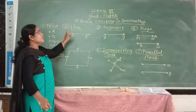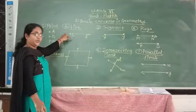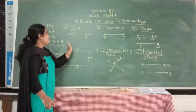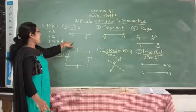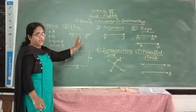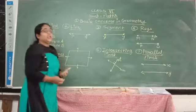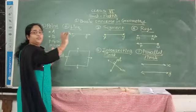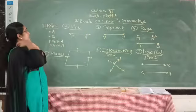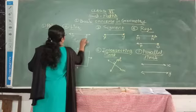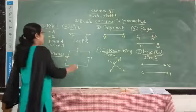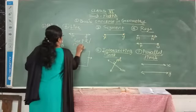The second basic concept in geometry is a line. Looking at the figure, we can see that there are two arrows on both ends of this figure. These two arrows indicate that this line is unlimited — it extends continuously in both directions. This line is written as line PQ.